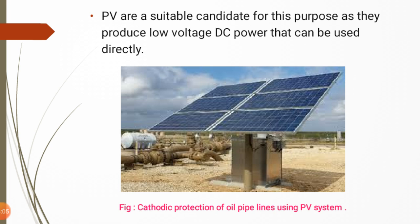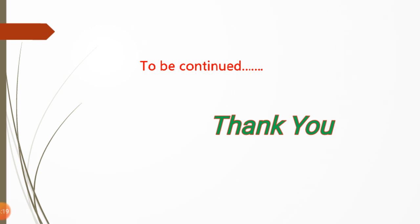These PV systems are used to prevent the corrosion process and also for water pumping — lifting water from a lower level to an upper level. These are two main applications of solar photovoltaic systems. There are other applications which will be covered in the next video.